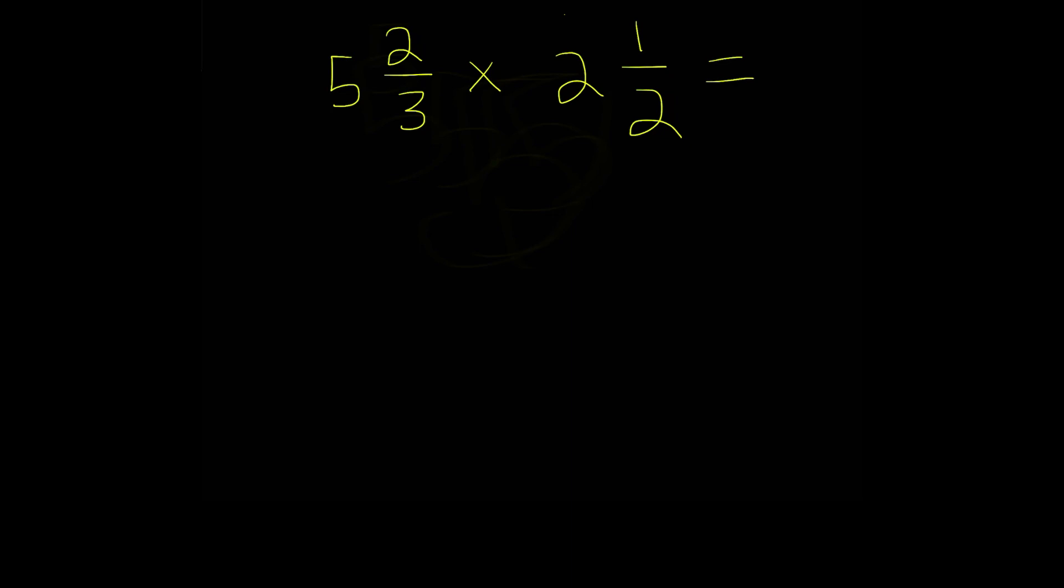And how we do that is, well right here we have 5 and 2 thirds. And the first thing we're going to do is multiply our denominator with our whole number. So we're going to multiply 5 and 3. What is that? 15. And then we're going to add that to our numerator here which is 2. And this equals 17. So 17 is going to be our numerator of our improper fraction. And our denominator actually stays the same. So 3, we just bring that right down here. 3 is going to be our denominator.